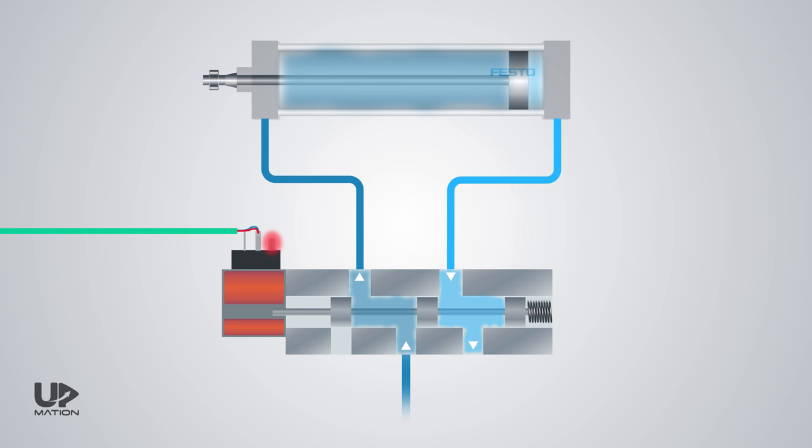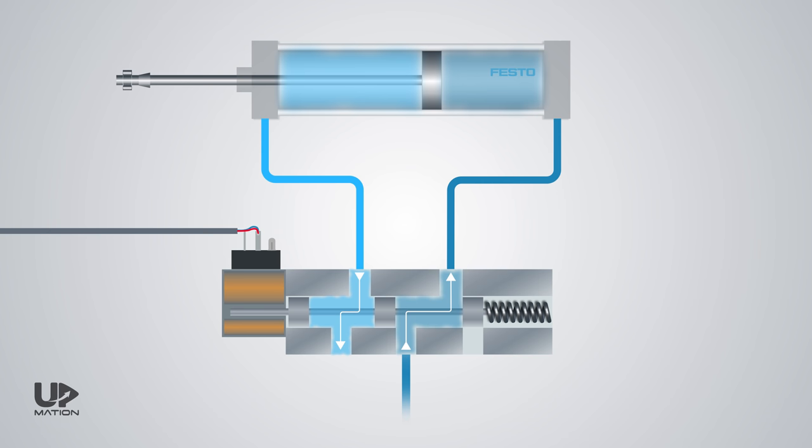As soon as the PLC removes the command, the spring will return the spool to its first position and the air path will be changed. Therefore, the air behind the piston will be purged into the atmosphere via the valve exhaust port.